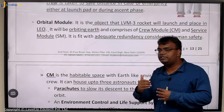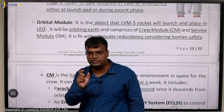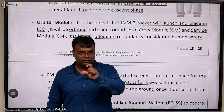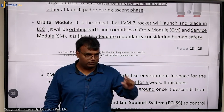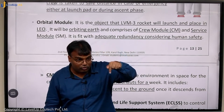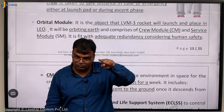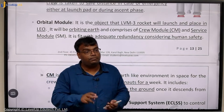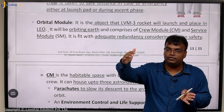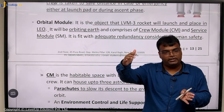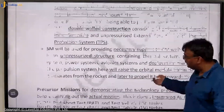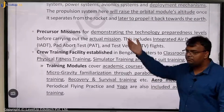The service module will provide basic services — for example, it will have a propulsion system. If you want to go to a bigger orbit or want to come back and land on earth, you need to change direction — the propulsion system helps with that. It is part of the service module, not the crew module, and both are part of the orbital module. These are the various components that have been developed.